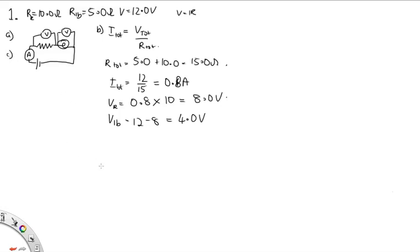Part D says calculate the power expended by the light bulb. To calculate power we use P = VI. We need the voltage drop across the light bulb, which is 4.0 volts, and the current through the light bulb, which is 0.8 amps. So the power is equal to 3.2 watts.